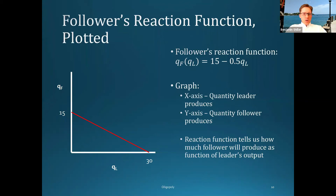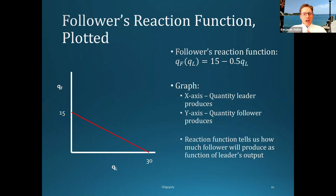Here we have the reaction function for the follower plotted. The vertical axis corresponds to the amount the follower elects to produce, and it's some function of the amount that the leader produces, shown on the horizontal axis. There are two main points: the amount the follower produces depends on how much the leader produces, and in particular, as the leader produces more, the follower produces less. As you move right along the horizontal axis, the height of this reaction function declines.